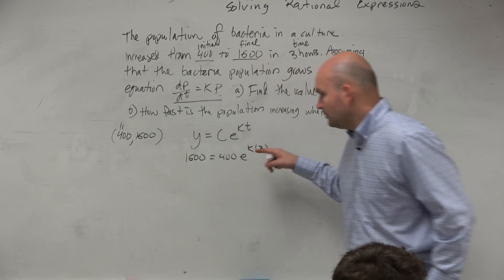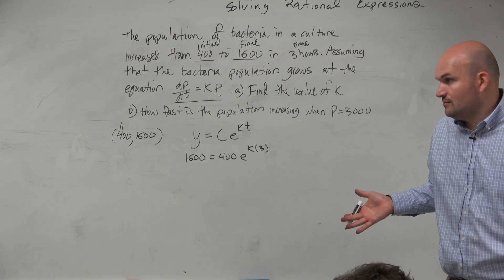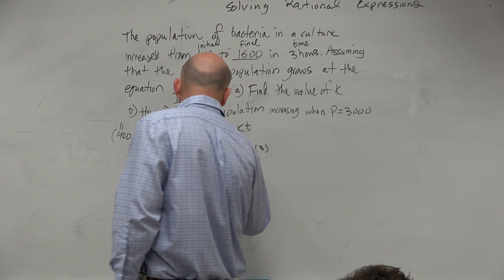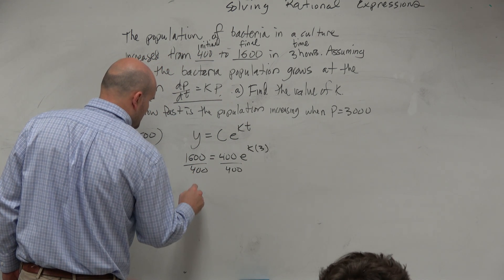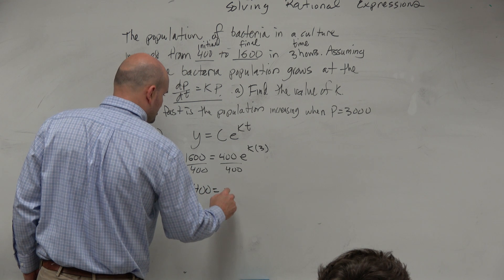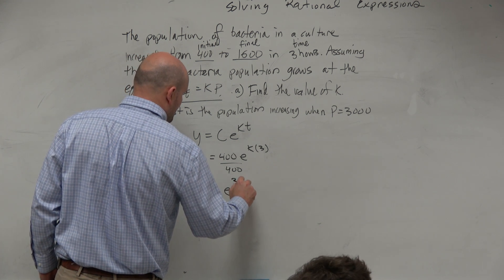Well, can we solve for k? Sure, right? What's happening to k? First of all, we want to get rid of this 400. So you have 4 is equal to e to the 3k.